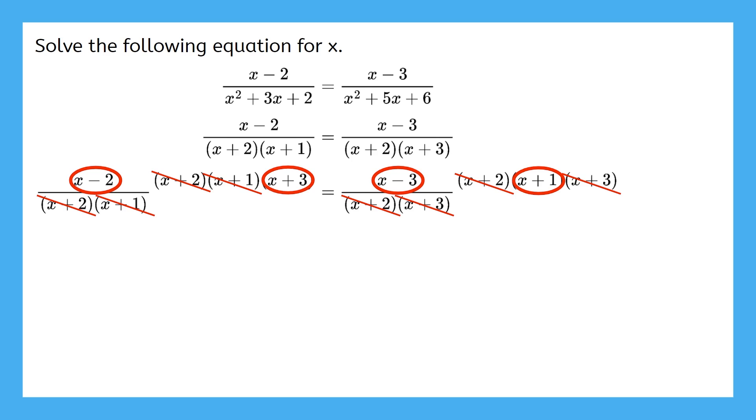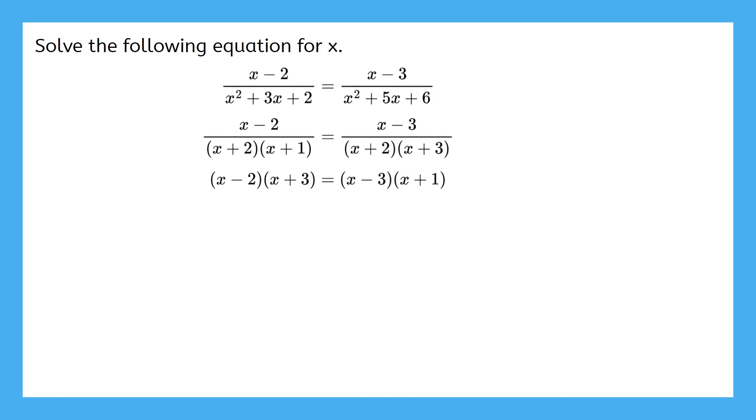The great thing is with so much canceling, if we get rid of all that, this is what we have left. Now this looks so much better. Let's finish solving this like we're used to. We can distribute here to get a trinomial on the left side. And we also can get a trinomial on the right side. The x squared actually cancels on each side.